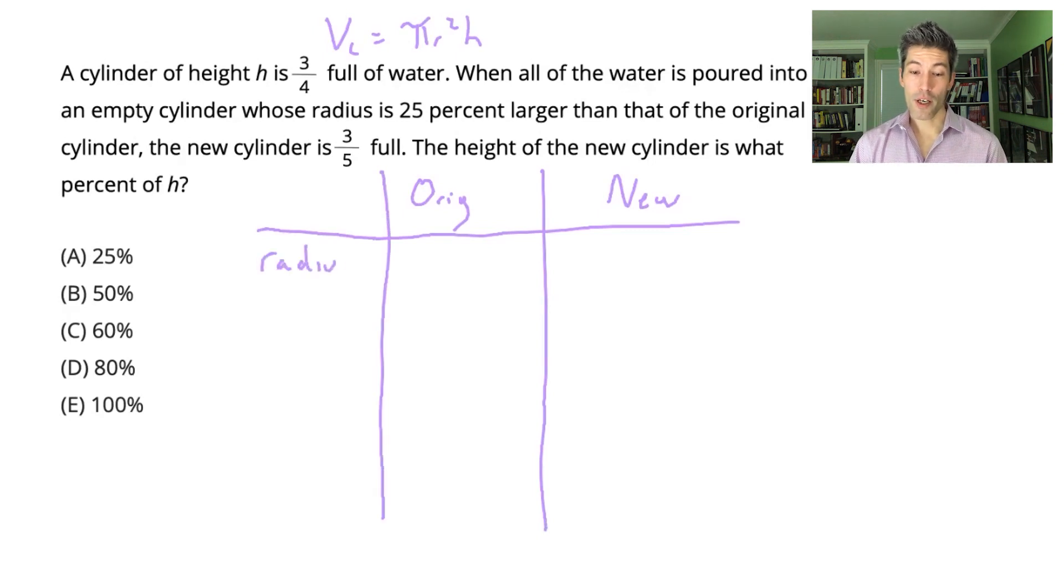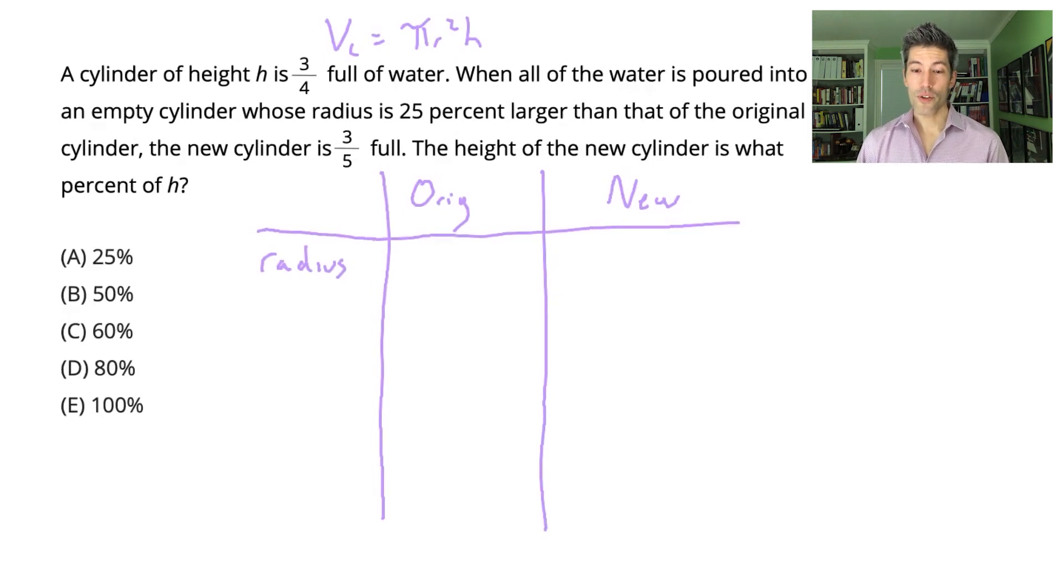Let's get information down about the radii of these cylinders. It tells me that the new cylinder has a radius that's 25% larger than the original cylinder. And so for me, the best number to pick here is a radius of 4 for the original cylinder. Because if the original radius is 4, 5 would be the value that's 25% larger than that.